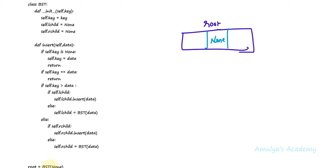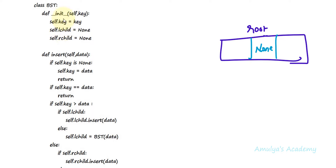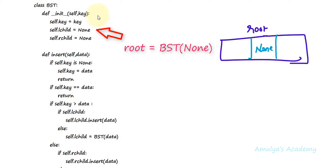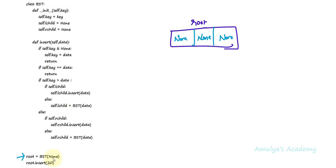When I create an object from the BST class, by default the initialization method will be called. So it will initialize key, lchild, and rchild of the root. Here self is nothing but the root object. So root.key will be None, root.lchild will be None — this is the default value — and root.rchild is None. After executing this line we will get an object root with key as None, lchild as None, rchild as None.